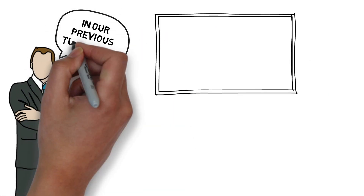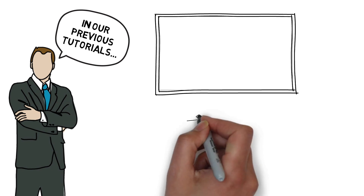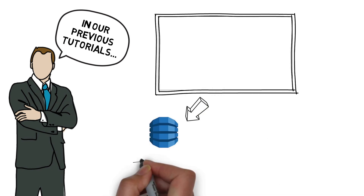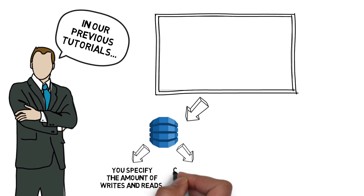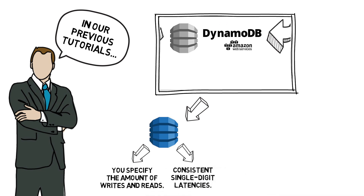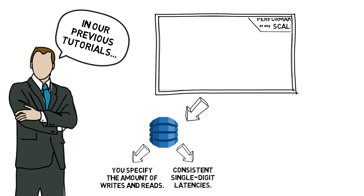In our previous videos, we explored a few solutions for your data storage and management needs using the flexible and innovative NoSQL language, like Amazon DynamoDB, where you specify the amounts of reads and writes with consistent single-digit latencies. DynamoDB is a non-relational database for applications that need performance at any scale. Let's talk about the main features of DynamoDB.